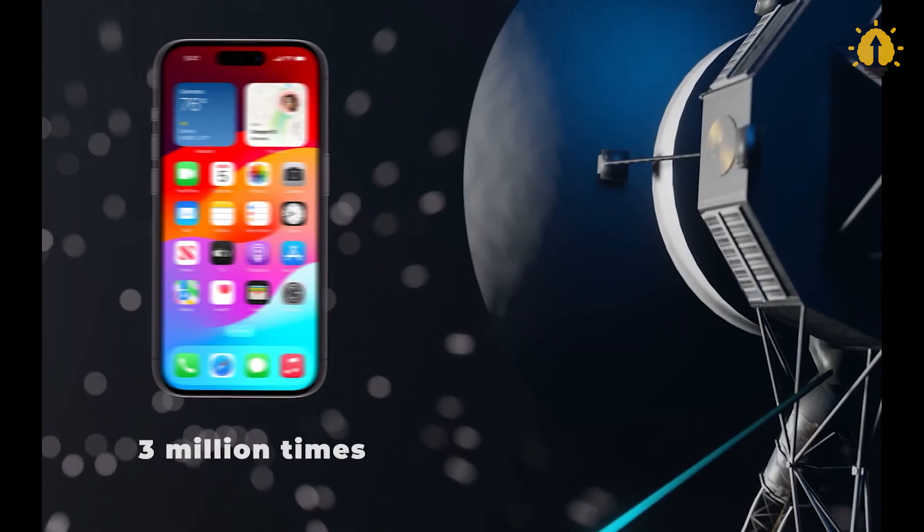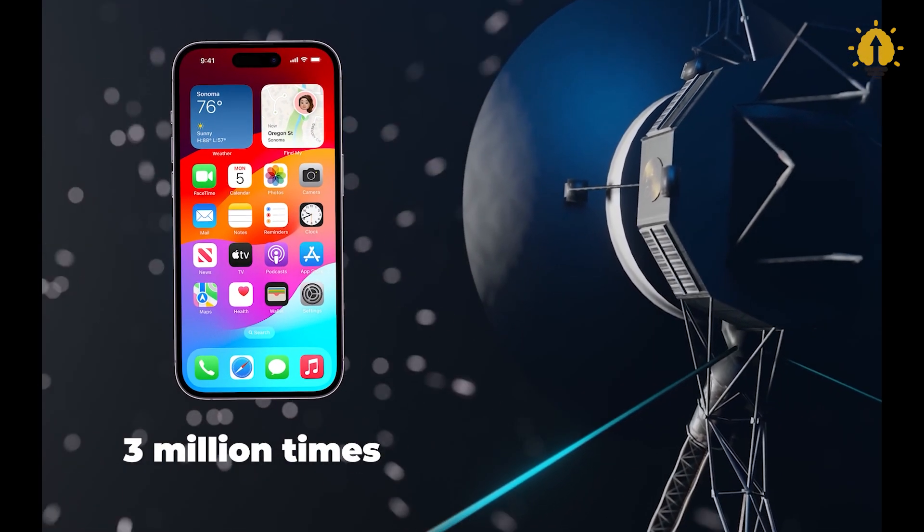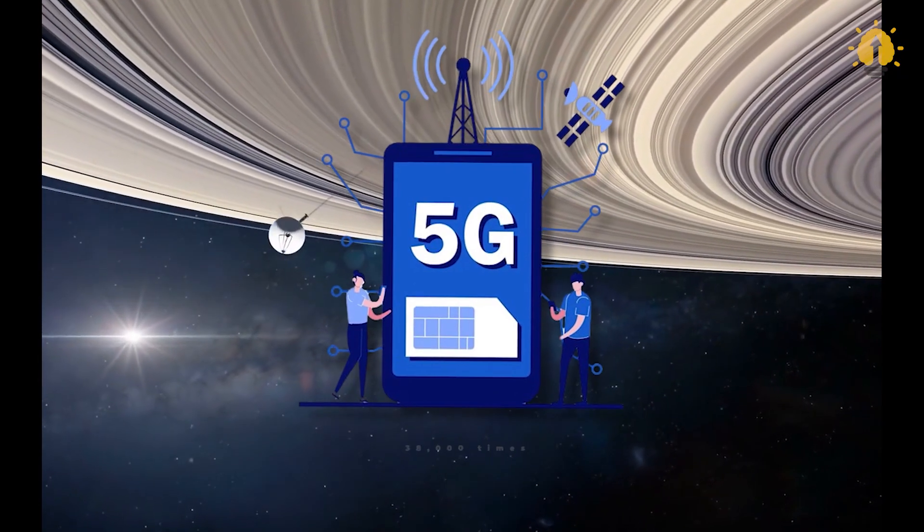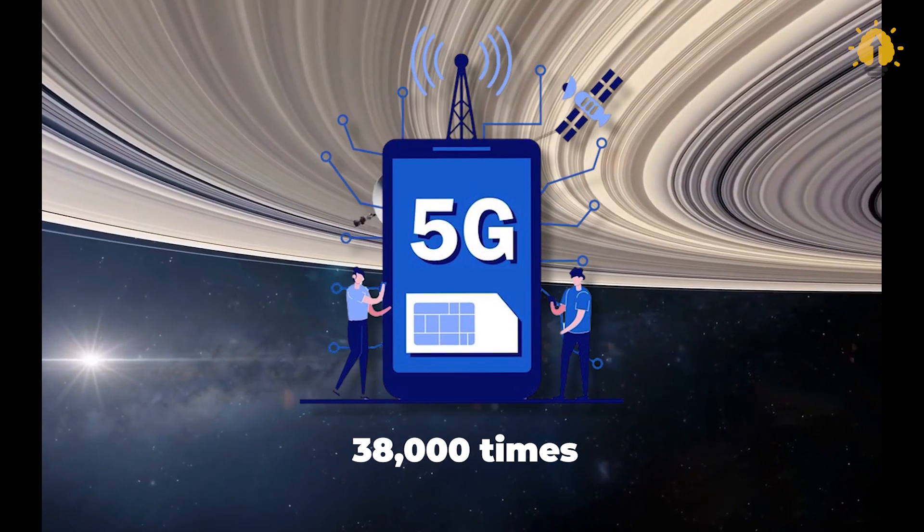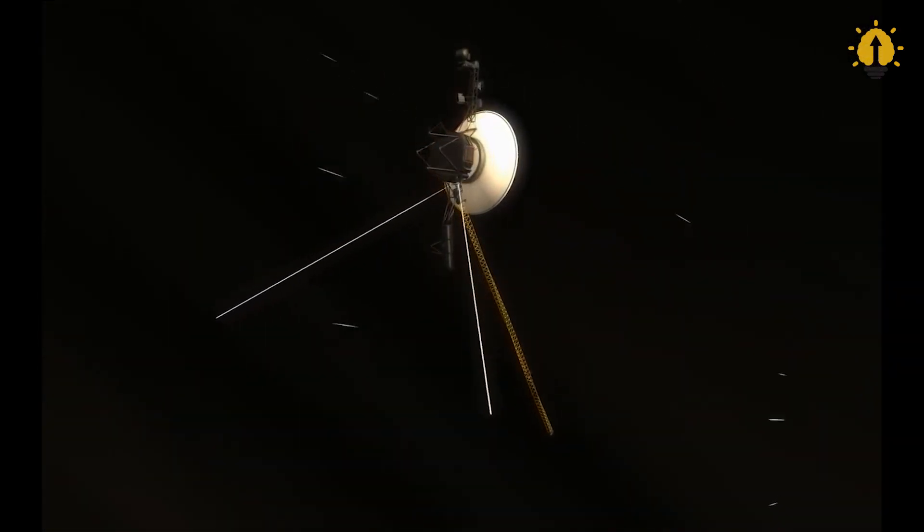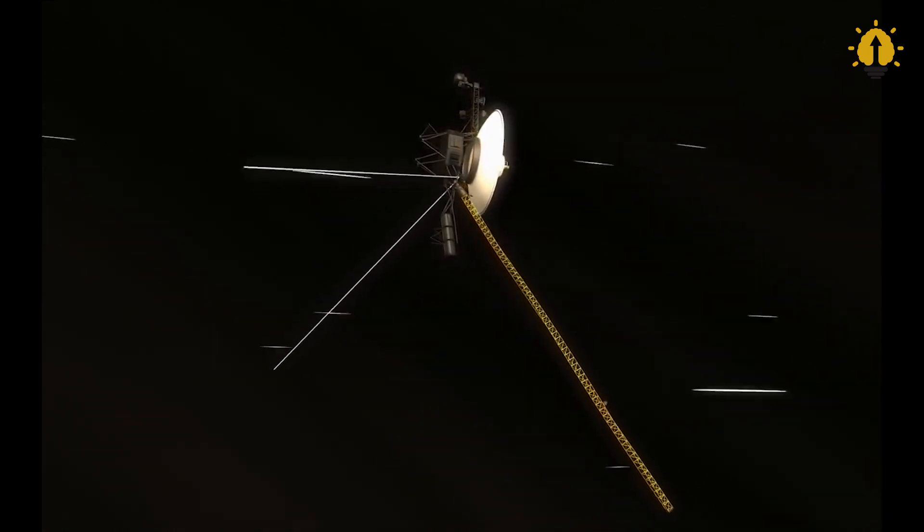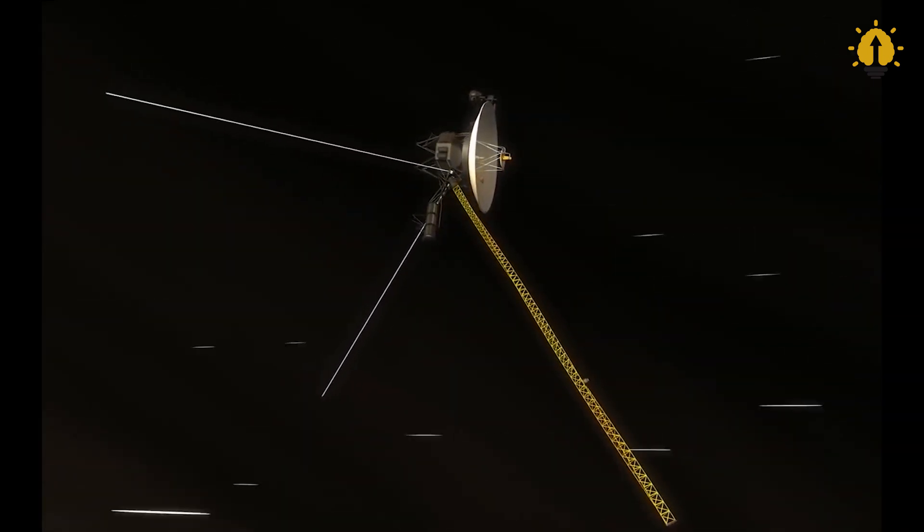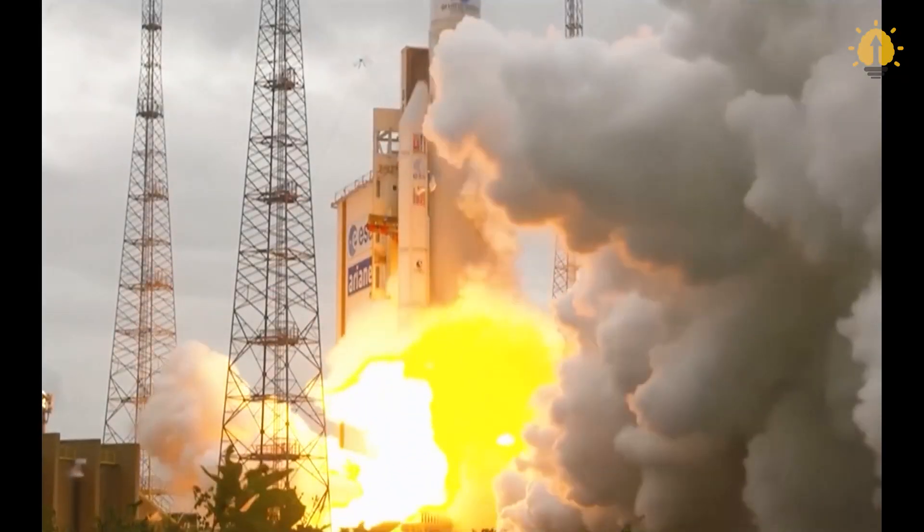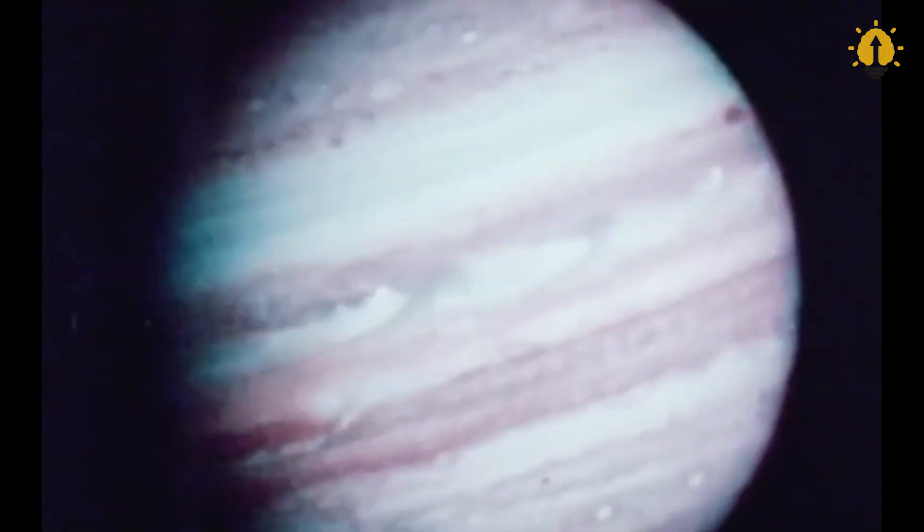Despite containing around 3 million times less memory than contemporary cell phones, transmitting data at a rate that is about 38,000 times slower than a 5G internet connection, NASA's twin Voyager probes have remained at the forefront of space exploration for the past 45 years, providing scientists with updated insights about not just Earth, but also our solar system and beyond.